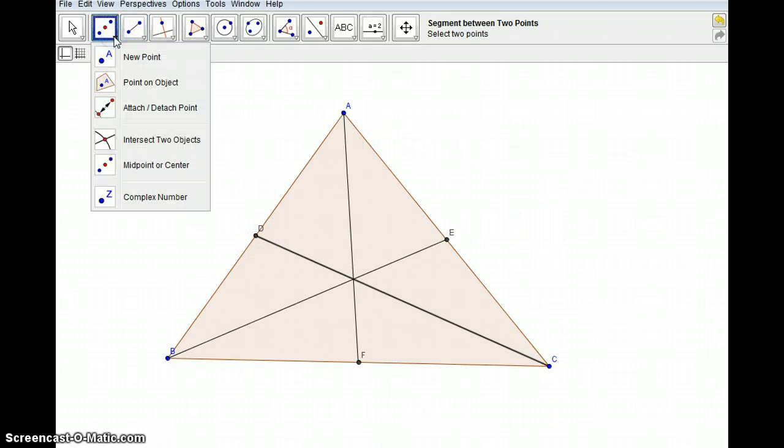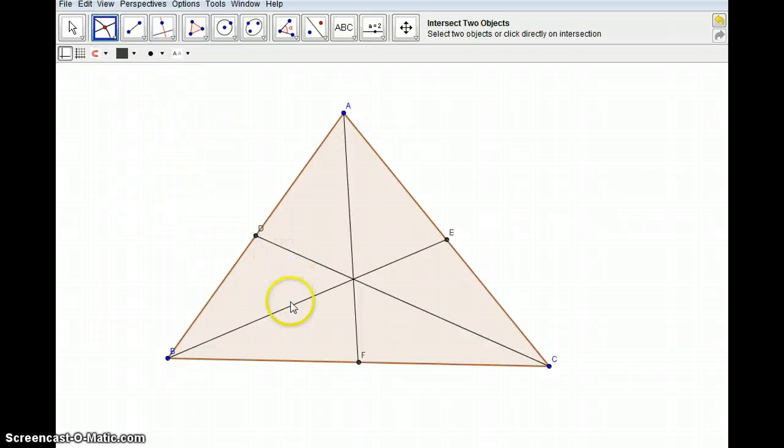Finally, we're going to plot our intersection point. Notice that one, two, three medians are intersecting at a single point, so they are concurrent.